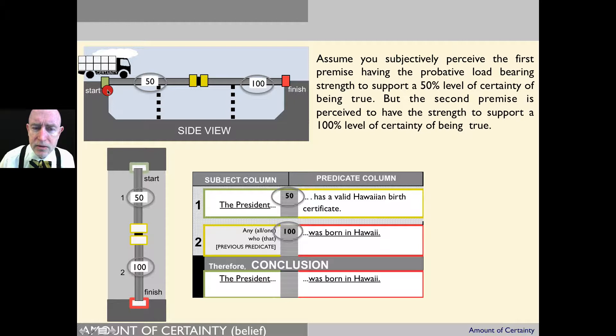Here we're going to assume that you subjectively perceive the first premise having the probative load-bearing strength to support a 50% level of certainty of being true, but the second premise is perceived to have the strength to support a 100% level of certainty of being true.